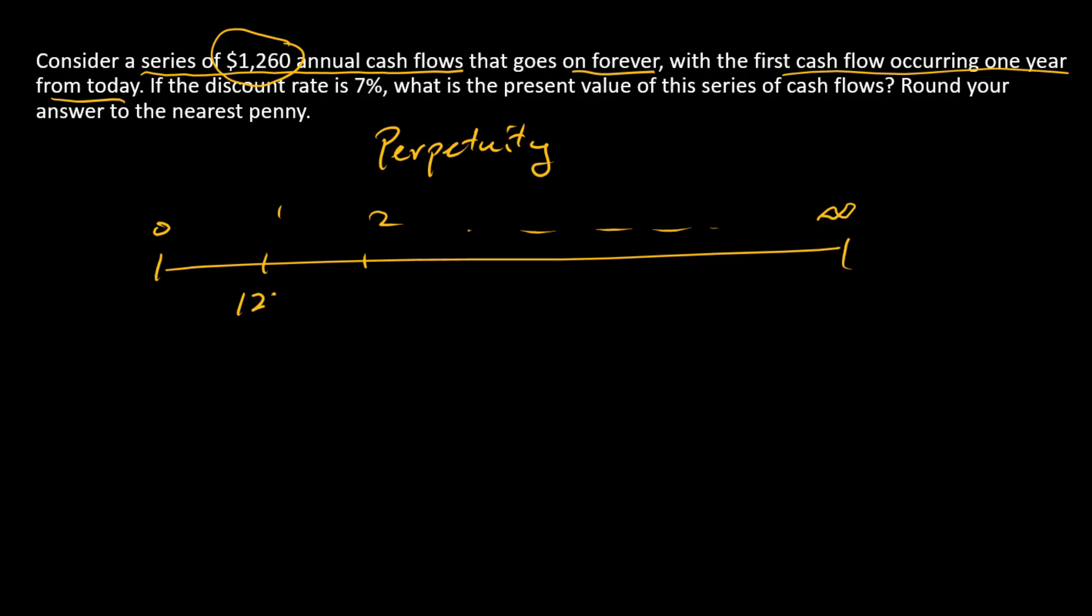We have this same cash flow; it repeats forever, that's why we have infinity on the timeline. The first payment occurs in time one, and that's a big deal to us—this time one first cash flow—because that indicates our standard out-of-the-box perpetuity formula will work just fine.